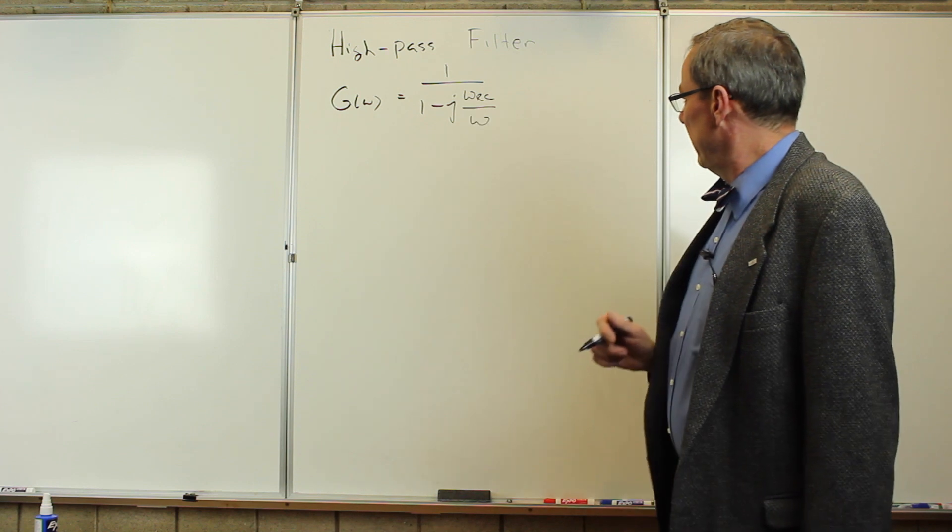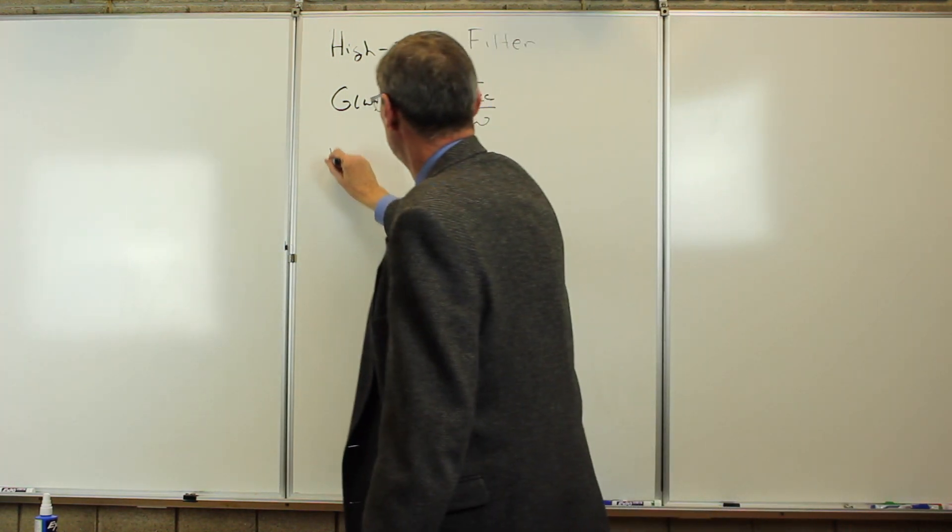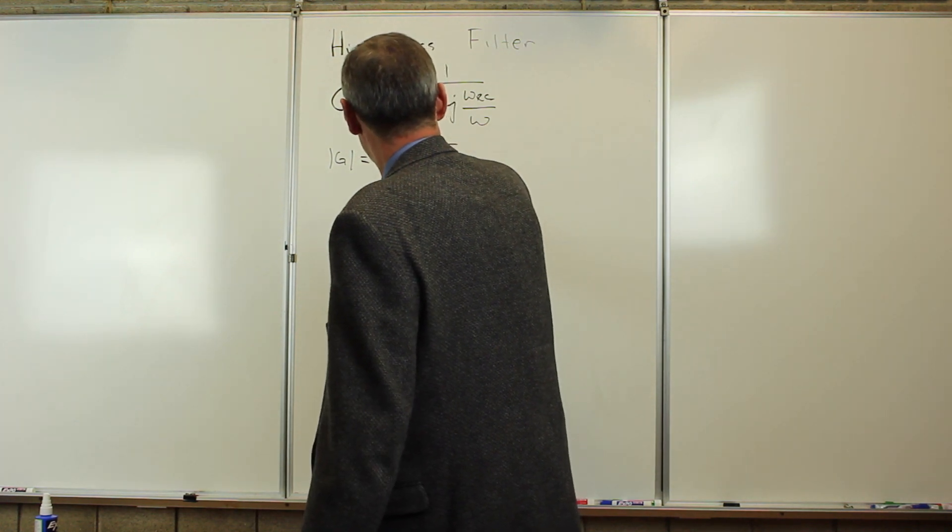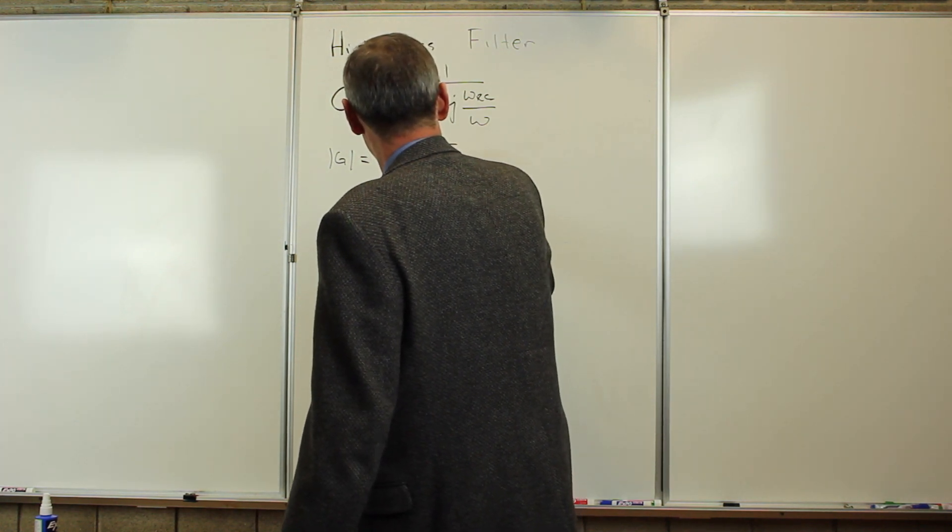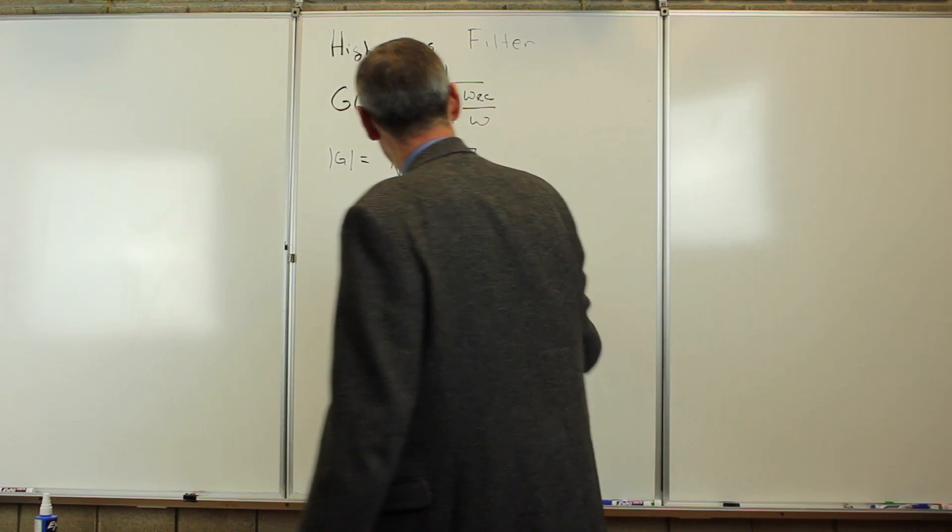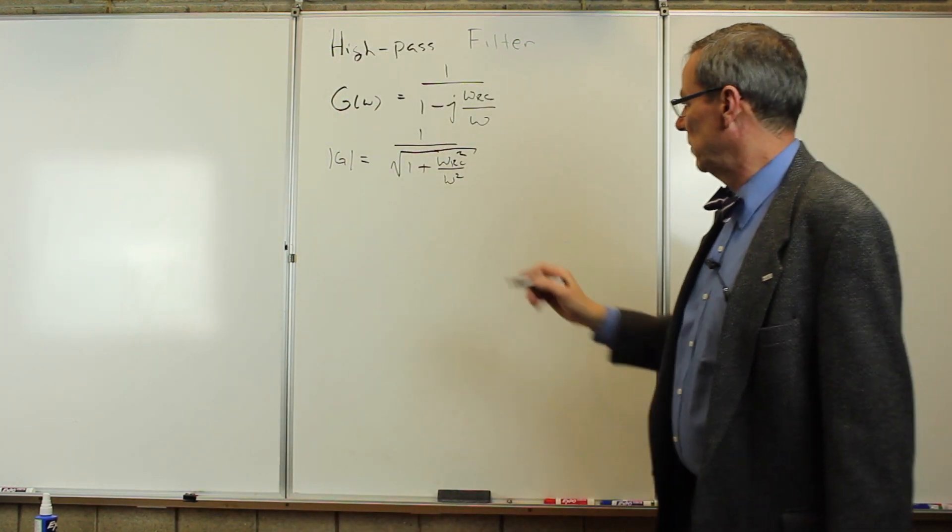We have the gain here. Let's take the magnitude of the gain. The magnitude is just going to be 1 over the square root of 1 plus omega RC squared over omega squared. And now let's look at some limits.